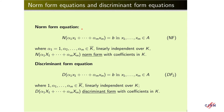A norm form equation is an equation of the form N_{K(alpha)/K}(x₁ + alpha₂*x₂ + ... + alpha_m*x_m) = b, where the norm denotes the product of conjugates of the linear form, and we may assume that alpha₁ = 1 and the other elements belong to K-bar.